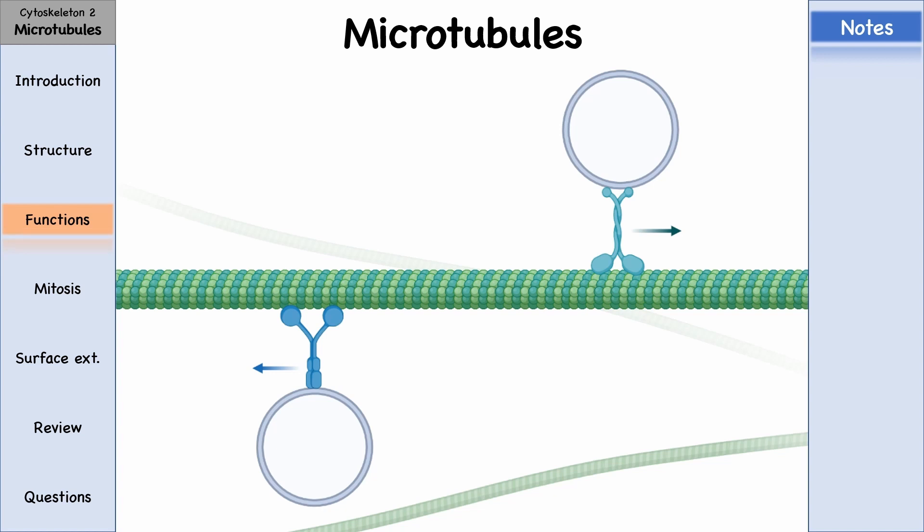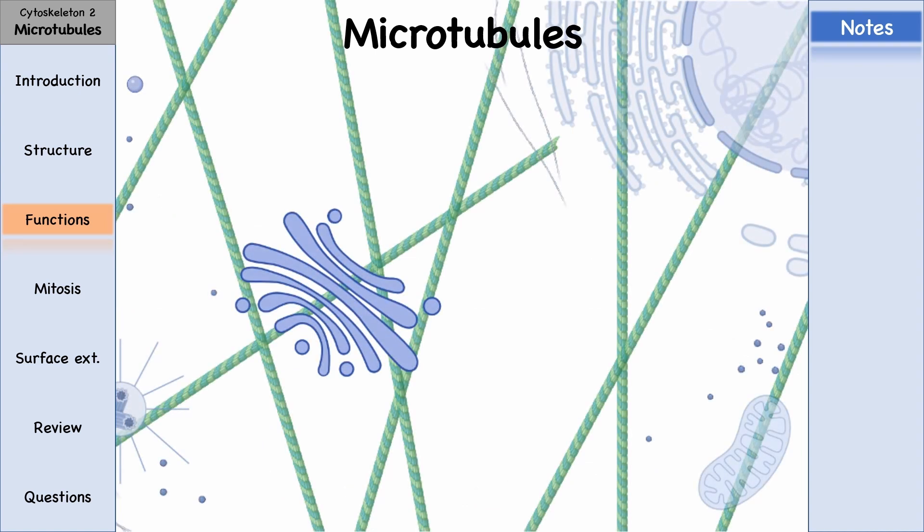The most important function of microtubules is that they form a pathway for the movement of vesicles in the cell, as they are connected between every two corners in the cell.